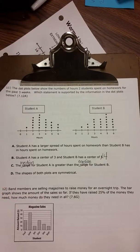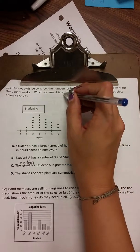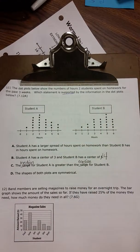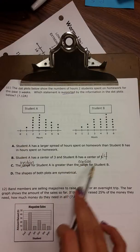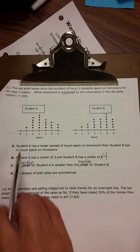All right, on number 11, it says the dot plots below show the number of hours two students spent on homework for the past three weeks. Which statement is supported, basically true, by the information in the dot plots below? And we made these changes before you started the test. So here we go.